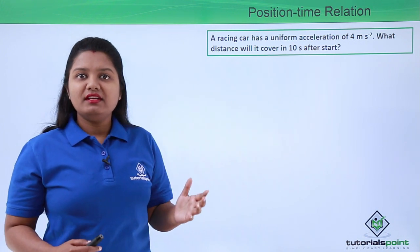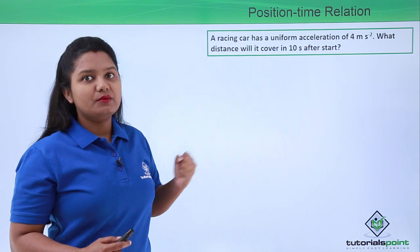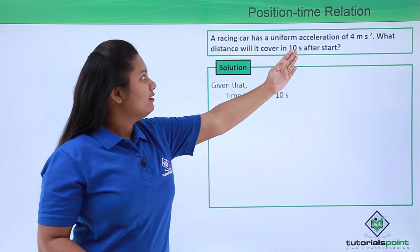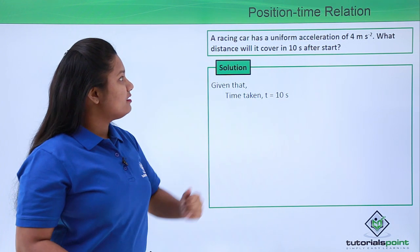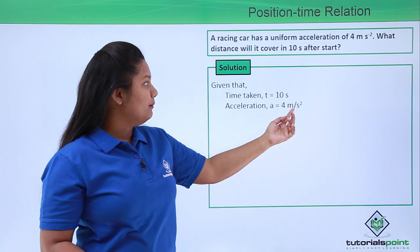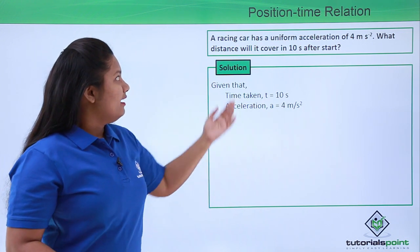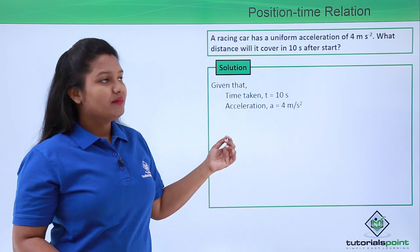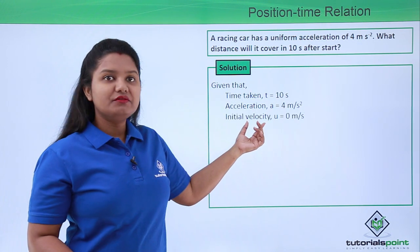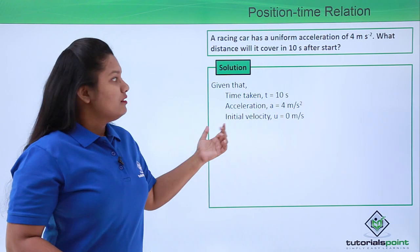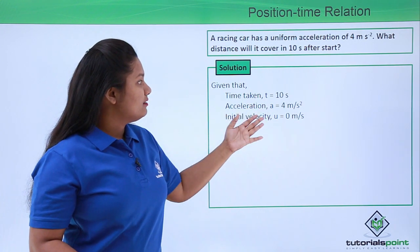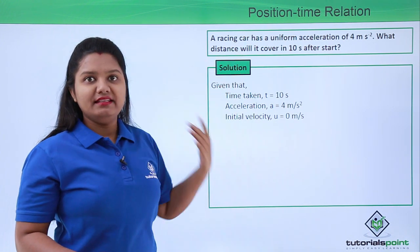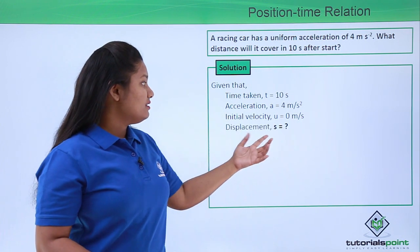First of all, let us note whatever is given in the question. We have the time is 10 seconds and the acceleration is 4 meters per second squared. Since the car has started from rest, we can take the initial velocity to be 0 meters per second. From this information we need to find out the distance covered by the car at the end of 10 seconds. So we need to find s, which is the displacement of the car.